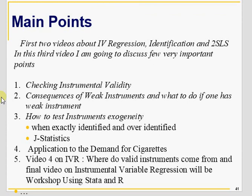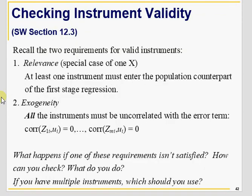Let's come to the main topic: instrumental relevancy and instrumental exogeneity in practice. We have two basic requirements: an instrument is relevant if it is correlated with X, the endogenous regressor, and secondly all instruments should be uncorrelated with U. So what happens if these assumptions are violated, and how do we deal with this?